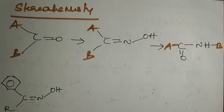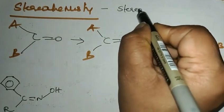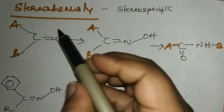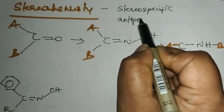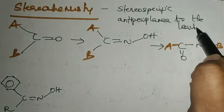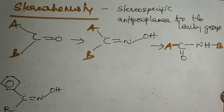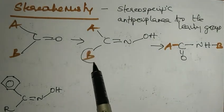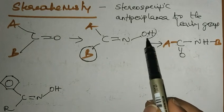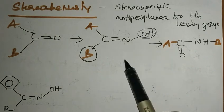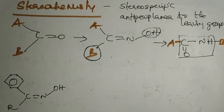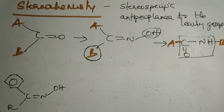Beckman rearrangement is a highly stereospecific reaction. The group which is anti-periplanar to the leaving group will be migrated. The OH leaves as water after protonation, and the anti-periplanar group migrates to give the amide bond. It is very simple to write a Beckman product because it is a highly stereospecific reaction.